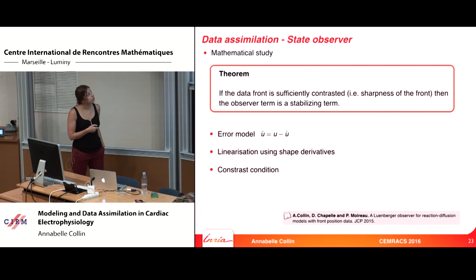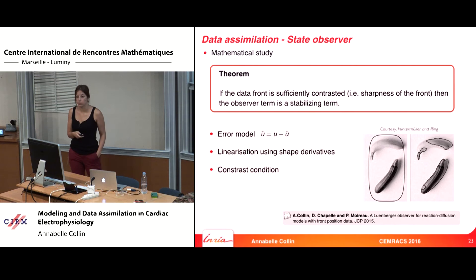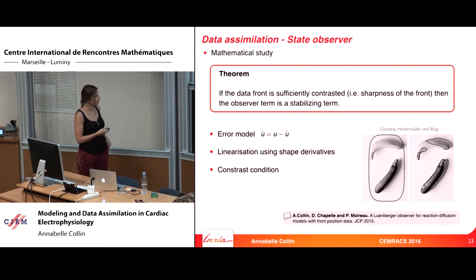We prove that the observer term provides stability. Given U as the solution of the target model and U-hat as the solution of the observer model, you compute the error and look at its energy. We prove that the new observer term decreases the energy of the error model, provided a contrast condition is verified — the same contrast condition known from image segmentation. You cannot segment a banana if the contrast condition is not verified, meaning you need a clearly defined value inside and outside the front.